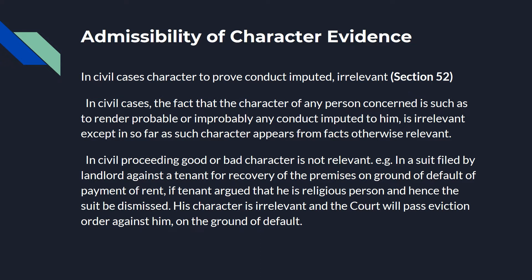There are certain cases in which character is a fact in issue or a relevant fact. For example, in a suit for libel, if the libel consisted in attributing bad qualities to the plaintiff and the defendant justifies the existence of these qualities, the existence of these qualities would be a fact in issue and evidence of character may be led. The character of female chastity has been received in evidence in an action for breach of promise of marriage. Best states that to admit character evidence in every case or to reject it in every case would be equally fatal to justice — that to draw a line or to define with precision where it ought to be received and where it ought to be rejected is as embarrassing a problem as any legislature can be called upon to solve.